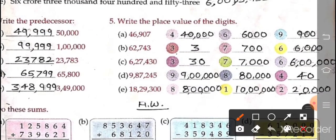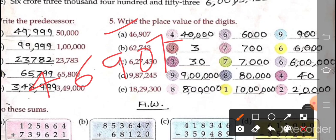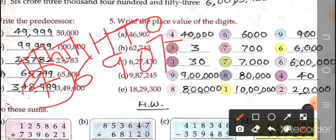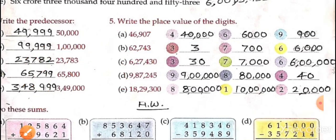Now write the place value of the digits. Part A: 46,907. Write the place value of 4 — 4 is in the ten thousands place, so its place value is 40,000. 6 is in the thousands place, so its place value is 6,000. And 9 is in the hundreds place, so its place value is 900. So like this we have to do.